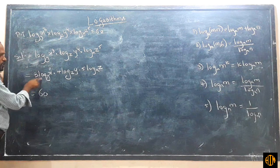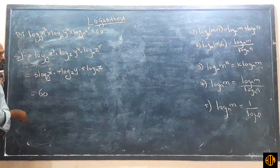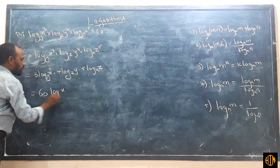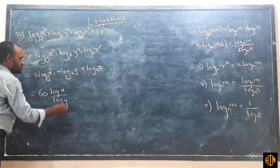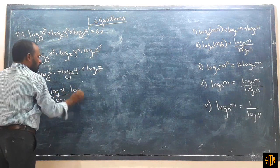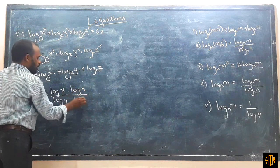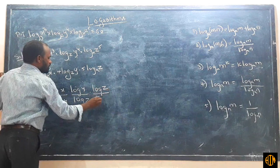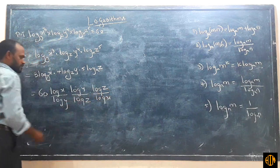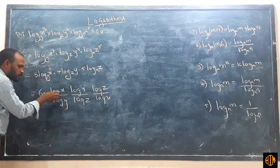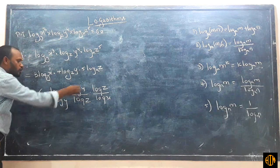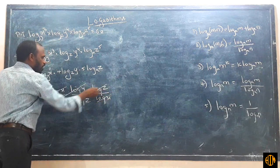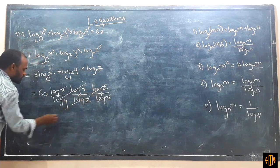Applying Law 4 (change of base): log x base y becomes log x / log y, multiplied by log y / log z, multiplied by log z / log x. All terms cancel, giving log x / log x, which equals 1. Therefore the result is 60.